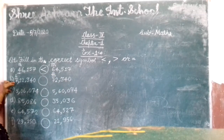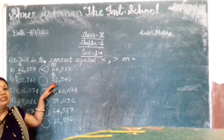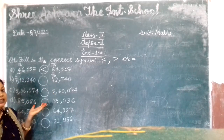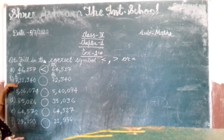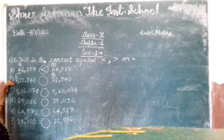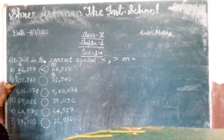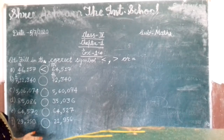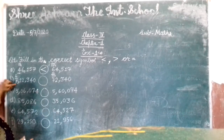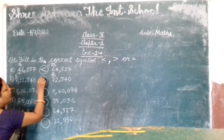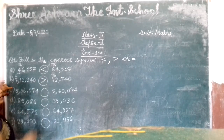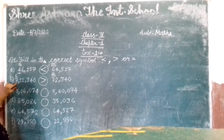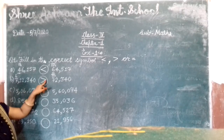Look here — this number has the lakh place and this number has the ten thousand place. Which one is greater? The number with more digits — the lakh place — will be greater, because it has more digits. So we can tell right away which is greater. The lakh place number is greater than the ten thousand place number, so we put the symbol accordingly.